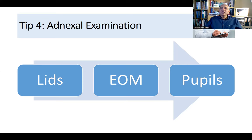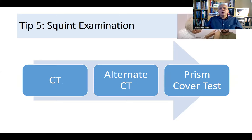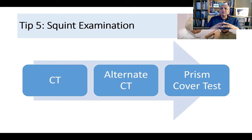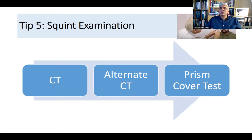Please see my videos on pupil examination, extraocular movements, and lid examination for detailed steps. Squint examination often frightens students, but it is straightforward if you've practiced with prisms. The main tests are the cover test, alternate cover test, uncover test, and prism cover test. Common cases include accommodative esotropia and exotropia; adult patients most likely have an exotropia, while children in thick glasses likely have accommodative esotropia.